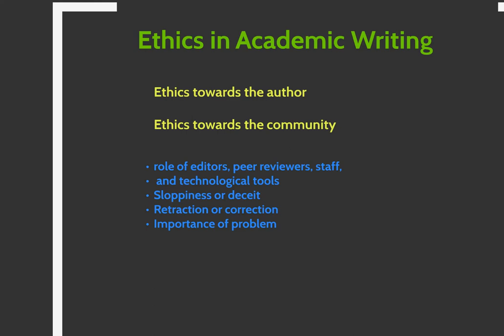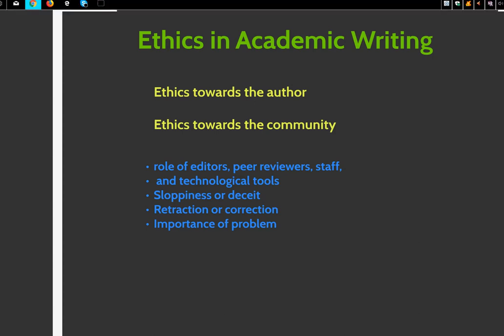It includes a variety of people: editors, peer reviewers, and staff, and a variety of technological tools, sometimes used to check whether papers have been copied. There are issues about whether ethics violations are sloppy or purposefully deceitful, what the punishments are, whether a paper should be retracted or simply corrected, and its importance — not only for the ethics of the individual author, but also for our understanding of the community, because it's often the community that discovers whether there's a problem with the paper.